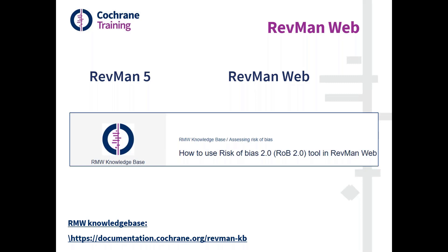Review teams wishing to use RoB 2 need to switch over to RevMan web. You can start off in RevMan 5, but you cannot publish your review using RevMan 5. The time to switch over is after you've joined the pilot and before you start entering data. There's a lot of support on how to use RevMan web on the RevMan web knowledge base — a link is provided at the bottom of the slide.